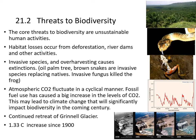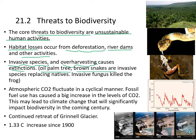So what's threatening biodiversity? The core threat is unsustainable human activities. Habitat loss occurs from deforestation, river dams, and other activities. Invasive species introduced by humans and overharvesting also cause extinctions. Oil palm trees are being planted, and brown tree snakes are an invasive species killing and replacing native species. An invasive fungus has also killed frogs that have no defense against it.